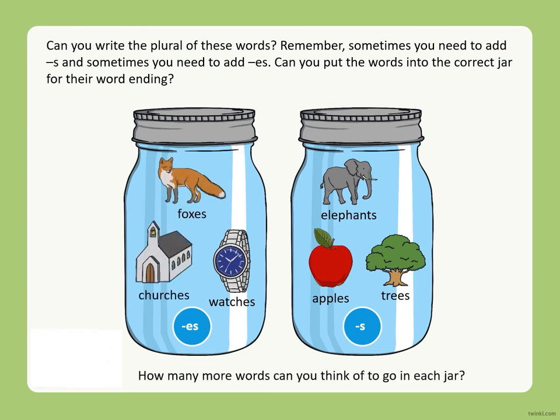Well done! If you said elephant, apple, and tree should go into the s jar — because they've become elephants, apples, and trees — well done! If you said fox, church, and watch should go into the es jar — because they've become foxes, churches, and watches — well done!